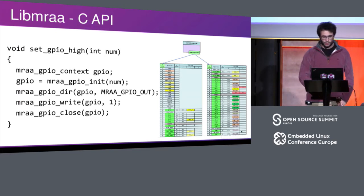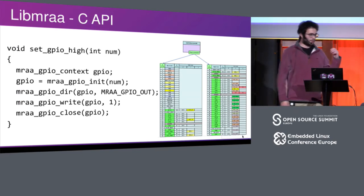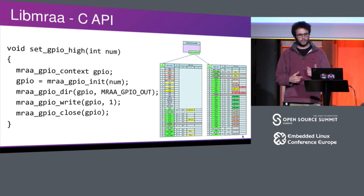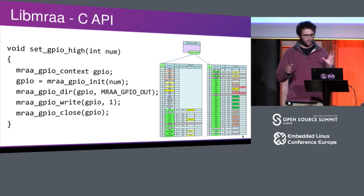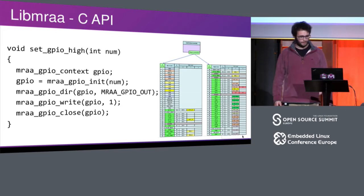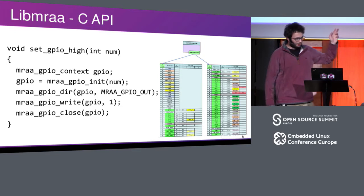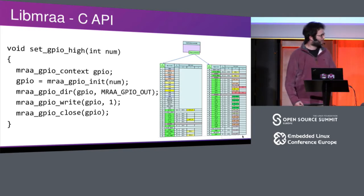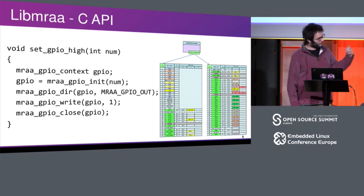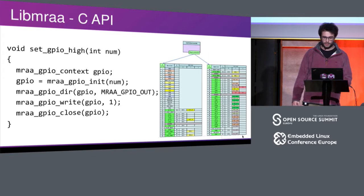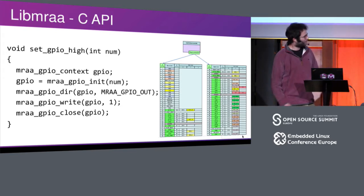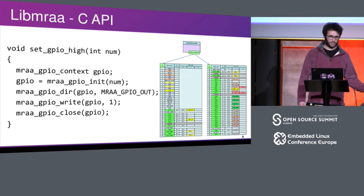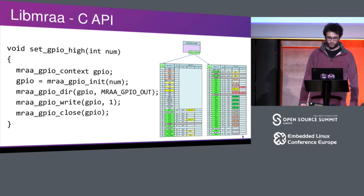Here's the quick C API demo. It's context-based - once you initialize the context it's a hidden pointer to a struct. You can pass it around and close it with the aptly named close function. Next to it is a table from an Intel Edison data sheet, which gives you an idea of what we actually do in the background when you make a call. When you ask for a GPIO, we look at the table for you, do the pin muxing if it's not done nicely, and essentially fix it up so it does the right thing. A lot of people use it simply for that.